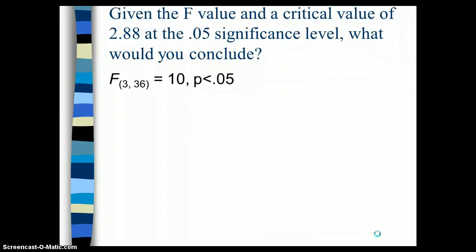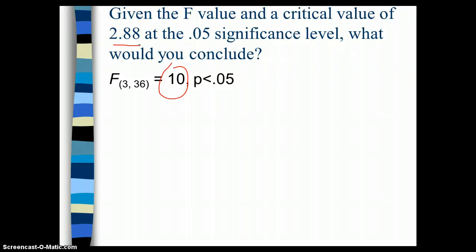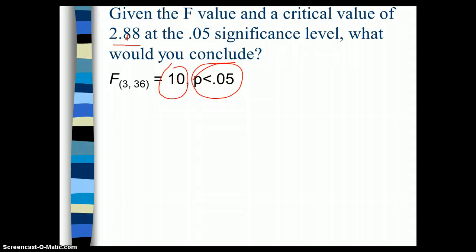If we have the F value shown here and a critical value of 2.88, what would you conclude? We would conclude that P is less than 0.05 — the probability of committing a type 1 error is less than 5%. This F is much larger than the critical F, and so we do have a significant difference among the groups somewhere in our set of groups.